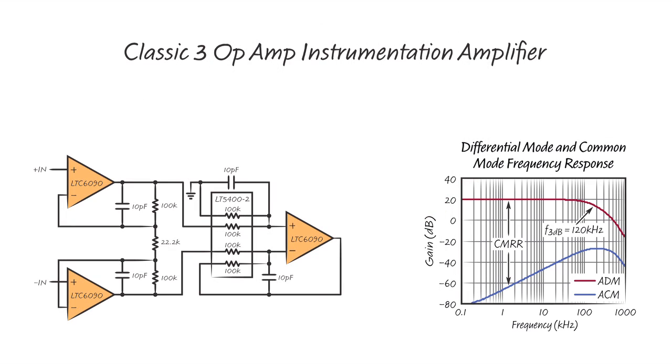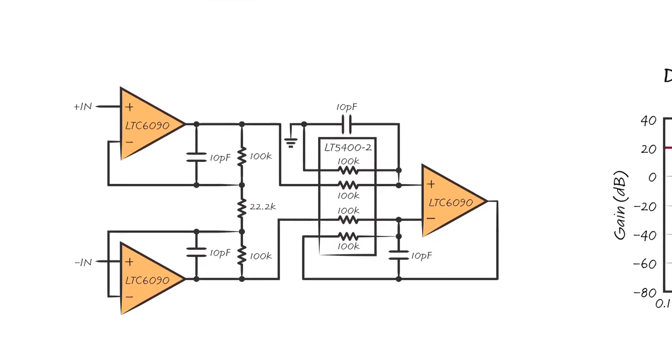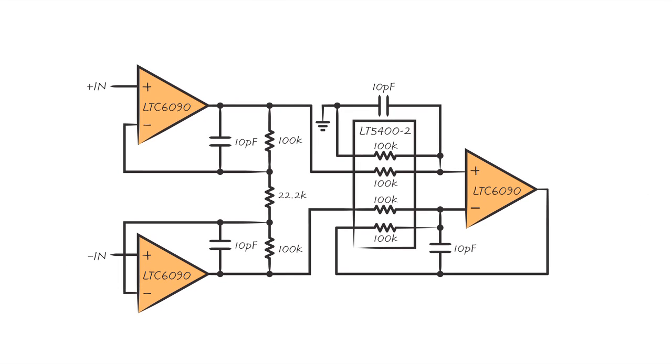The high common mode rejection makes the LTC6090 very useful in a classic buffered 3 amplifier instrumentation amp. Used in this configuration, the instrumentation amplifier presents almost infinite input impedance to accurately sense, amplify, and level shift small voltages over its plus minus 67 volt common mode range.